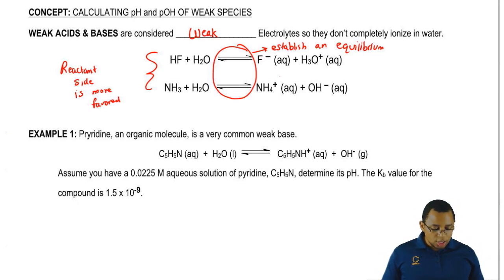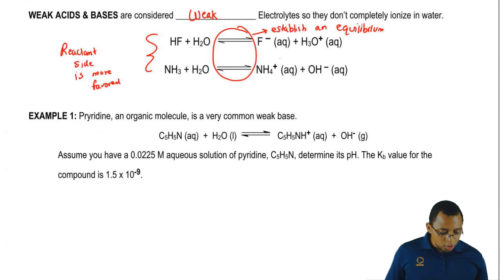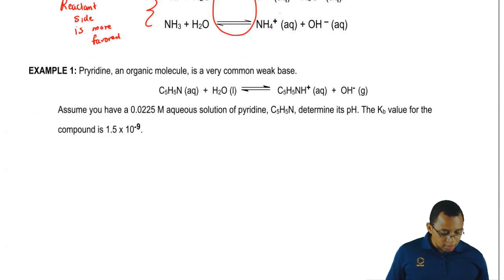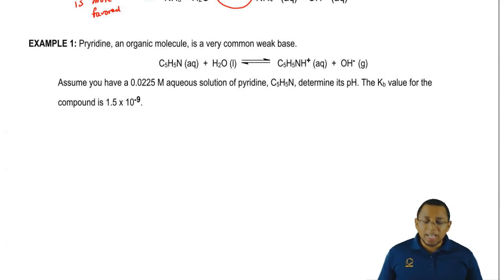Let's take a look at this first question here. It says pyridine, an organic molecule, is a very common weak base. We should know that it's a weak base because if we take a look at pyridine, it has carbon, hydrogen, and nitrogen.